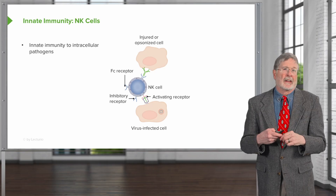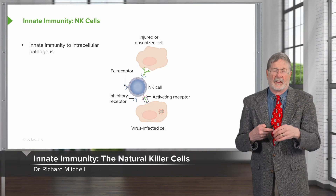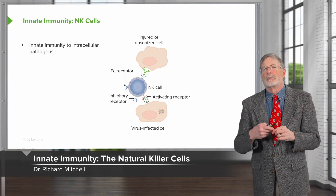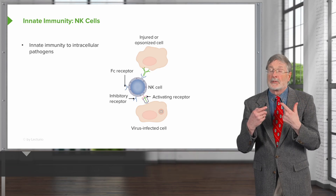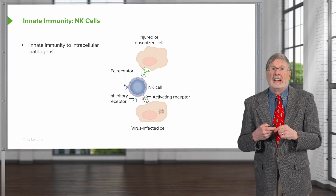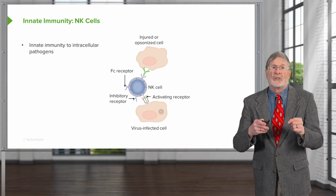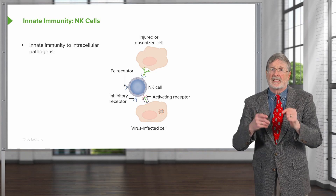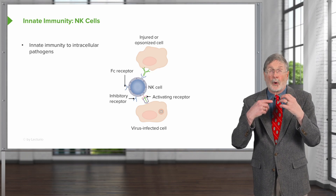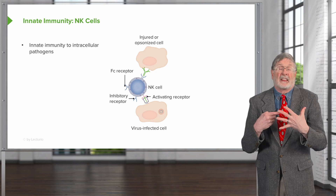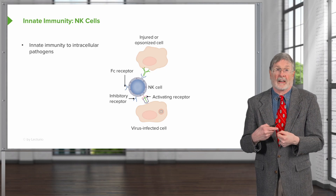Let's look at the natural killer cell. In the previous talk, I likened these to a deranged person with an AK-47. If natural killer cells don't see an appropriate self-antigen — a friendly face — they will fire.